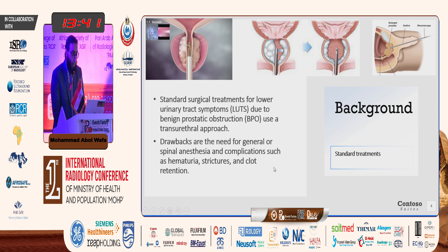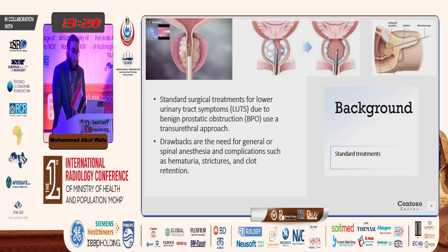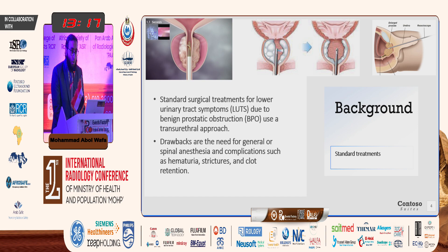The standard treatment is through the transurethral approach, and some drawbacks may occur due to general or spinal anesthesia. Post-procedure, the patient may have hematuria, stricture, clot retention, retrograde ejaculation, or some incontinence.